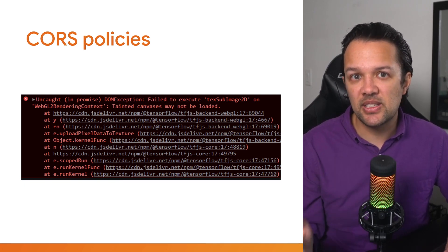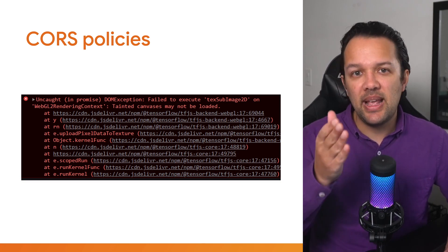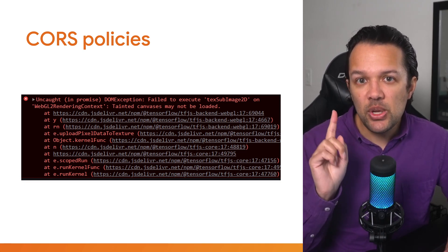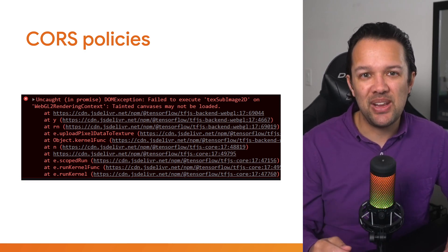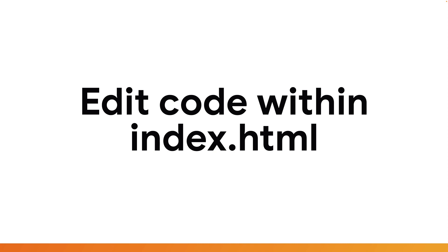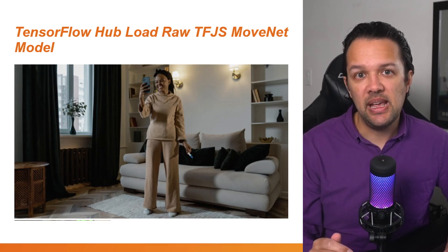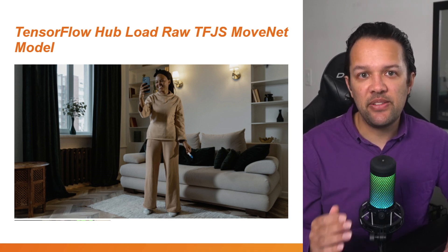If you host a file without setting these headers correctly, you might see a message stating that your canvas has been tainted. If your image is served on the same domain as your frontend code, this will not be an issue, but watch out if you use images hosted from other domains. Next, you'll modify the HTML code to add an image to the web page. Edit the body of your index.html to add the example image, giving it an ID of 'example image', a width and height of 640 and 360 pixels respectively, the crossorigin attribute to avoid CORS issues, and set the source attribute to point to the JPEG image. If updated correctly, you should now see a web page with the image showing.